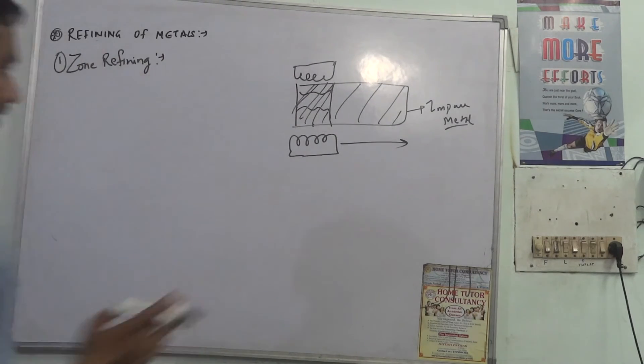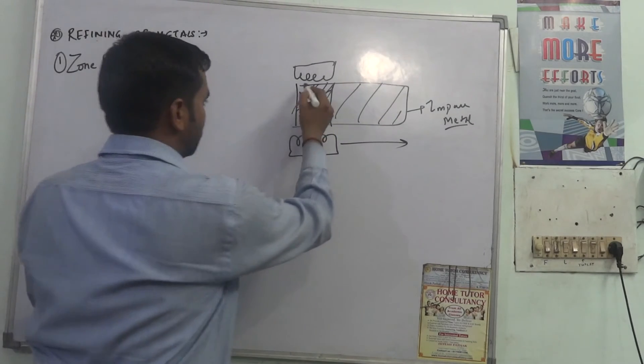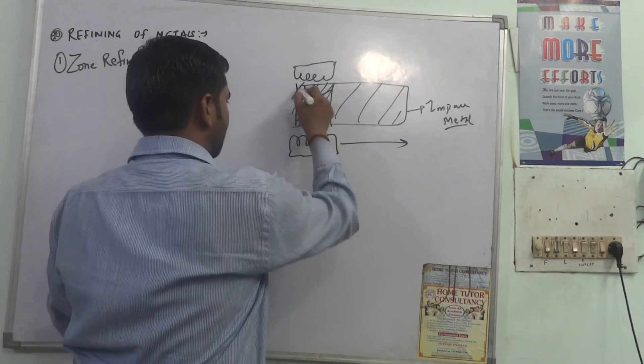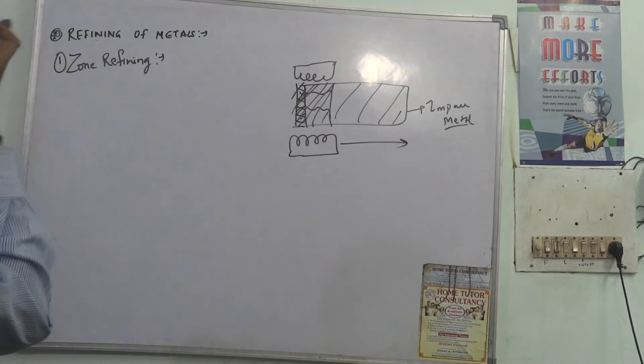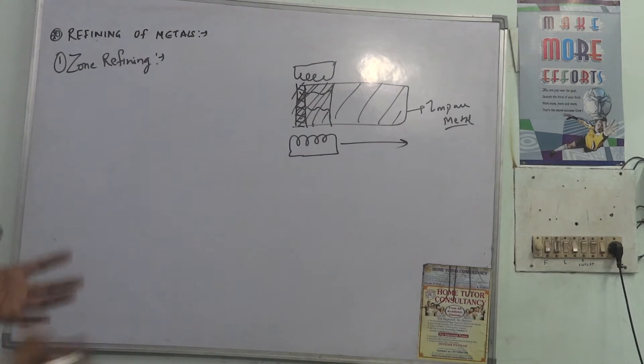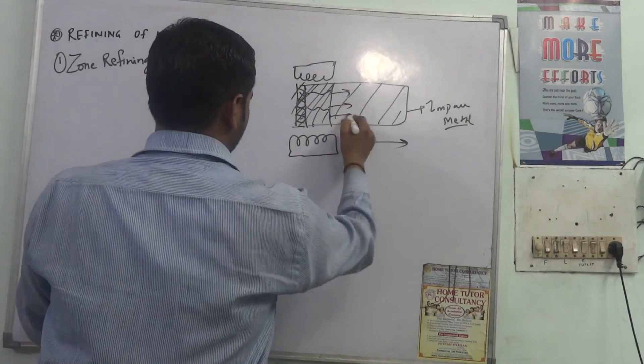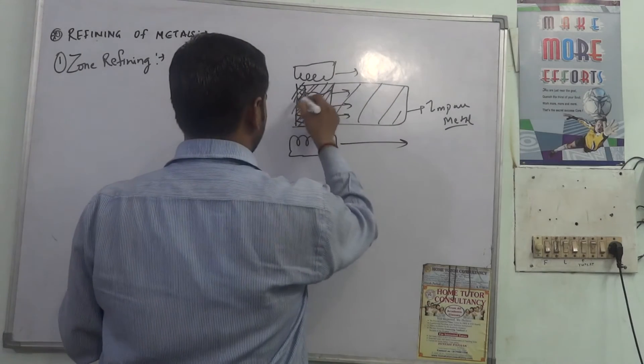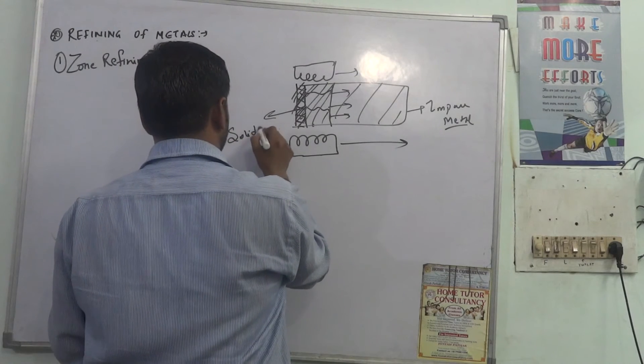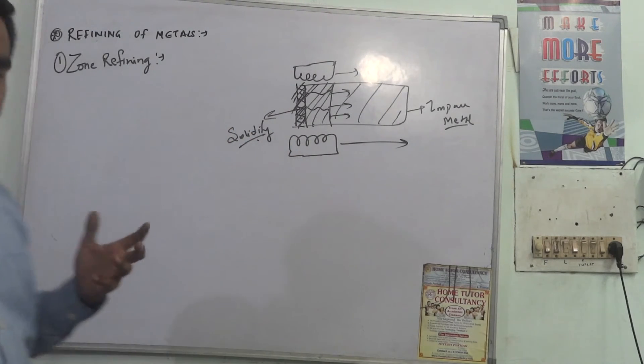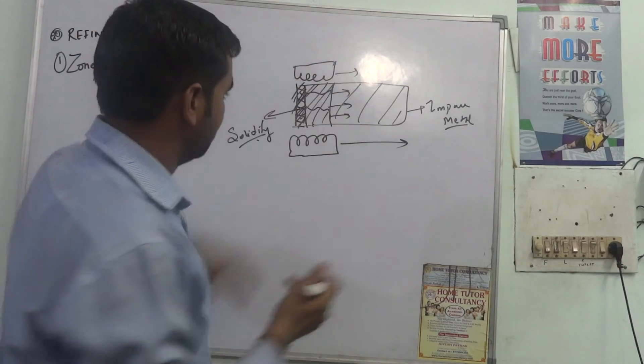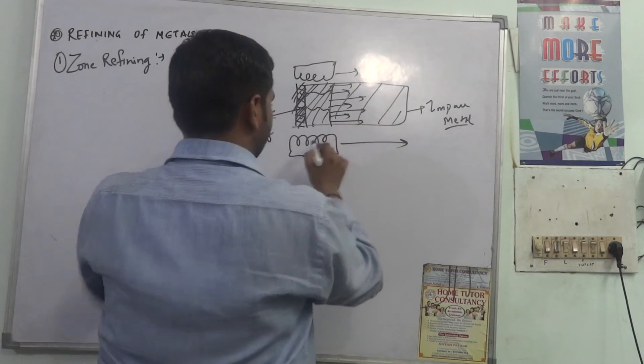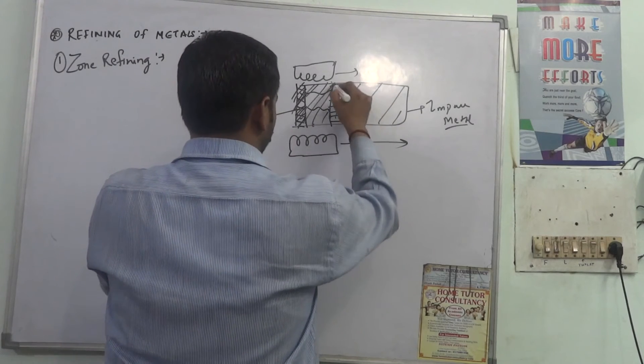And when the whole material is melted, which are the impurities of the metal, the impurities shift between the solid and molten state. The impurities shift to the molten state.